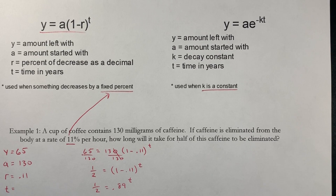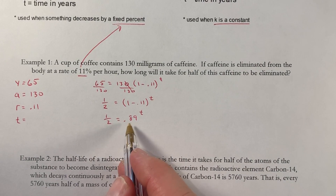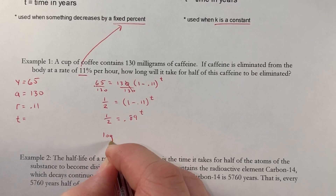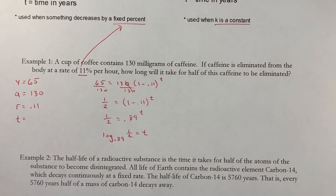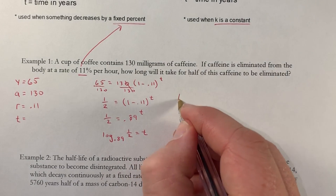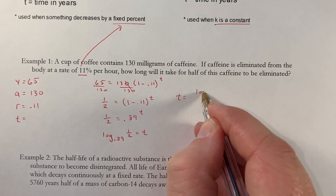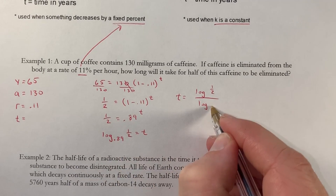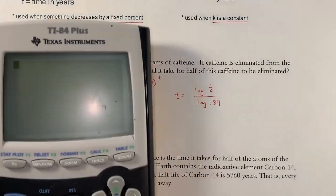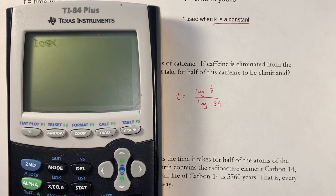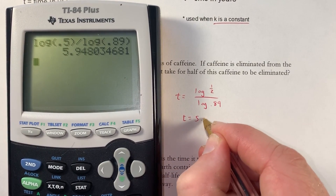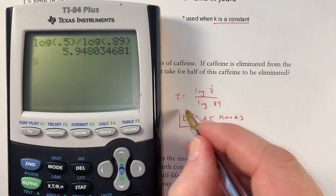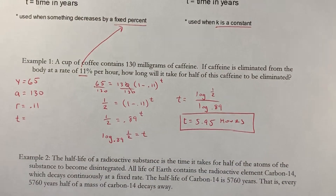Now we can use logarithms to solve this. We put it into log form: log base 0.89 of (1/2) = t. Then we use the change of base formula: t = log(0.5) ÷ log(0.89). Entering that into the calculator gives 5.95. So in 5.95 hours, half the caffeine will be eliminated from the body.